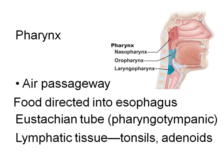Lymphatic tissue in the naso- and oropharynx — the tonsils and adenoids — helps protect against infection. Because of their structure, they can become homes for bacteria, causing tonsillitis. Sometimes tonsillitis resolves with antibiotics, but if the tonsils become so chronically infected, it's better to remove them in a tonsillectomy.